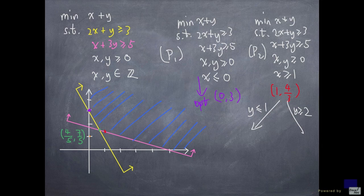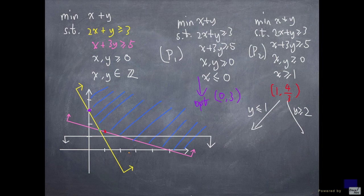y is at most 1 is going to be this constraint here. And we see that an optimal solution will be here. And this point is going to be 2 comma 1.